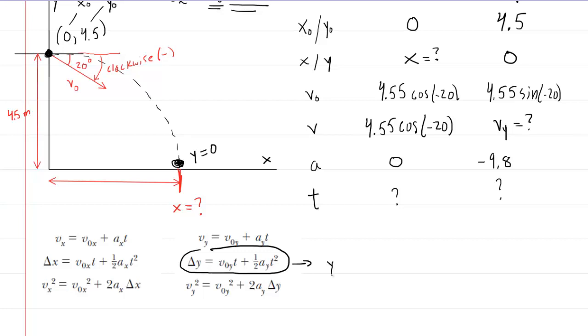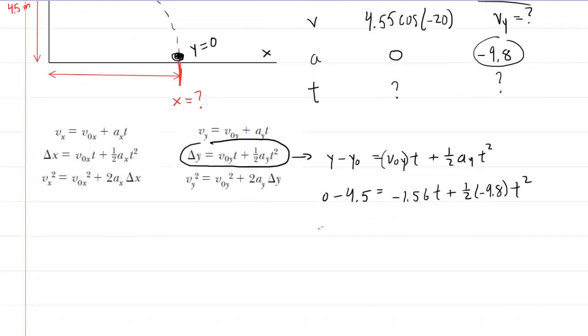So delta y, of course, can be rewritten as the final y coordinate minus the initial y coordinate. And then this will equal the initial velocity in the y direction times time plus 1 half acceleration in the y direction time squared. Now, we can begin to fill in the known values. Remember that the final y coordinate was 0 and the initial y coordinate was 4.5. The initial velocity in the y direction, we wrote that out as 4.55 times the sine of negative 20. But why don't we go ahead and actually punch that into a calculator? So 4.55 sine of negative 20 would be negative 1.56 approximately. That would be in meters per second. Times the time plus 1 half times the acceleration in the y direction, which was that negative 9.8 value. And then times the time squared. We'll simplify a little here. We'll have negative 4.5 on the left side. And then we can also multiply the 1 half by negative 9.8. This will give us negative 4.9 t squared.